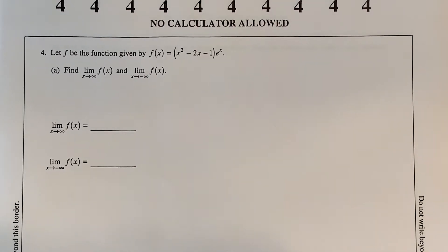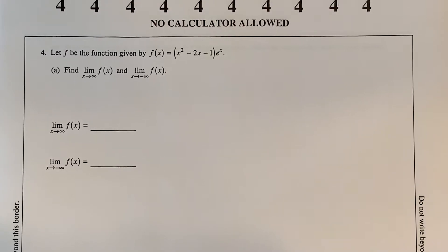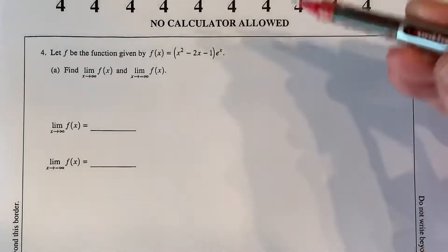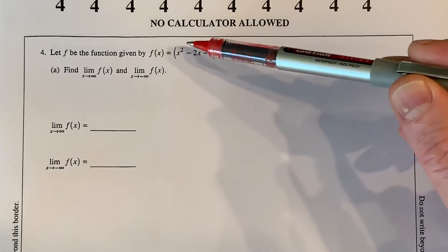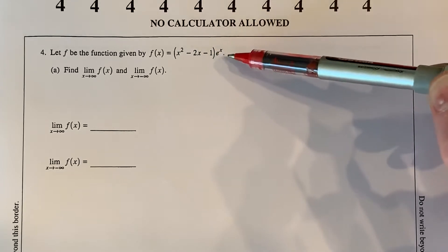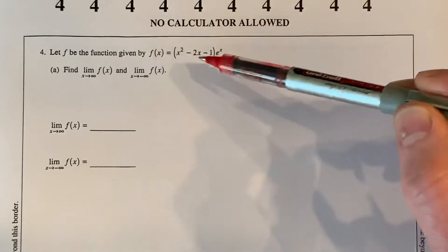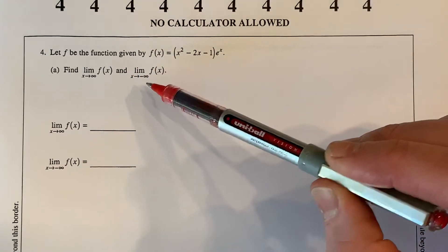All right, guys, welcome back. This is just me running through the solutions to numbers four through six on that free response test. Number four, first question says: let f be the function given by f of x equals the product of x squared minus 2x minus 1 times e to the x. It says find the limit of that function as x goes to infinity and as x goes to negative infinity.